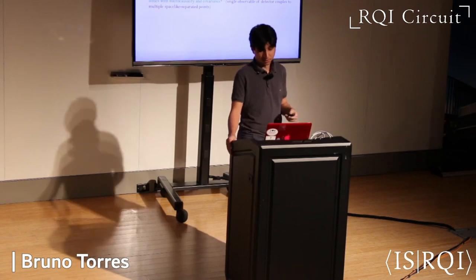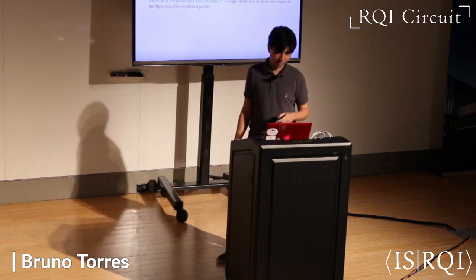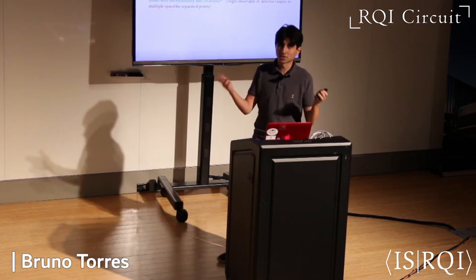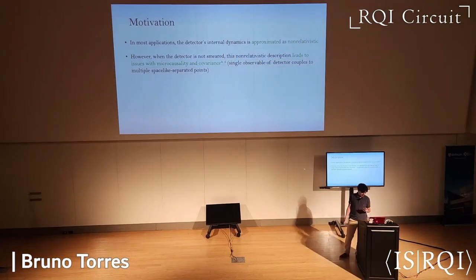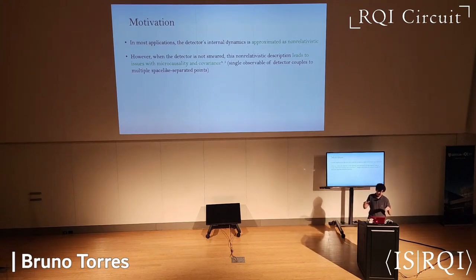More fundamentally, issues arise such as microcausality and covariance. The easiest way to understand why is because you essentially have a single observable of the detector coupling to multiple spacelike-separated points that have a given value of the detector's proper time.